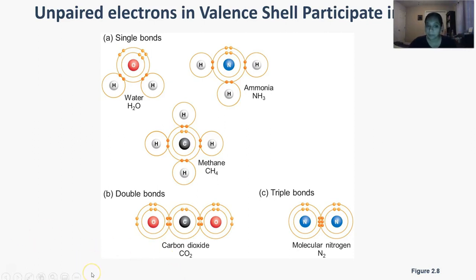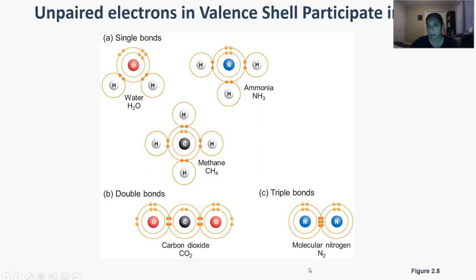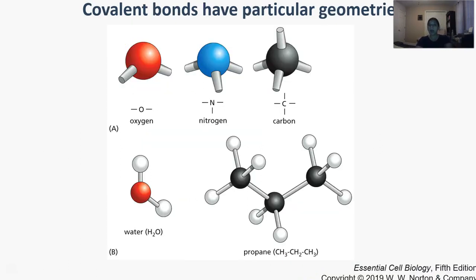That would be a double bond. Similarly in nitrogen, you can create even a triple bond where two nitrogen atoms — this is just molecular nitrogen — get together and share three electrons each, creating that full valence for each one of them. Depending on how many interactions are formed between each atom, and whether it's a single, double, or triple bond, the shape of the molecule can change — they have very specific geometries depending on how many bonds are present.